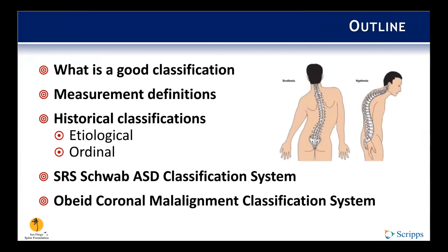So what we're going to do: we're going to briefly touch on what a good classification is. We'll go through some of the measurement definitions for adult spinal deformity. We'll go through a history of some of the classifications, both etiological and ordinal. And then we'll finish up with the two main classification systems in use now — the SRS-Schwab adult spinal deformity classification and the OB coronal malalignment classification system.